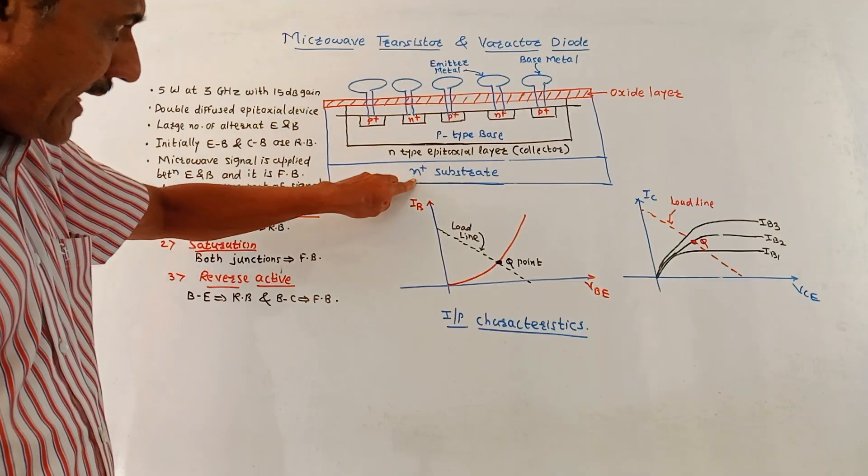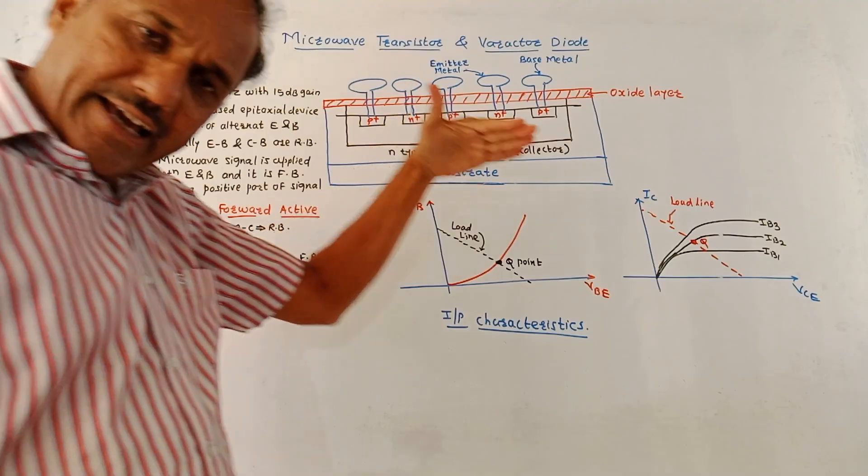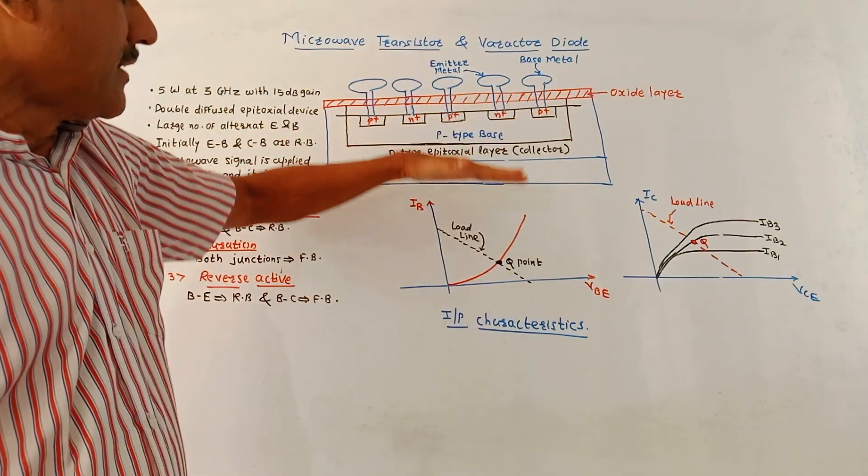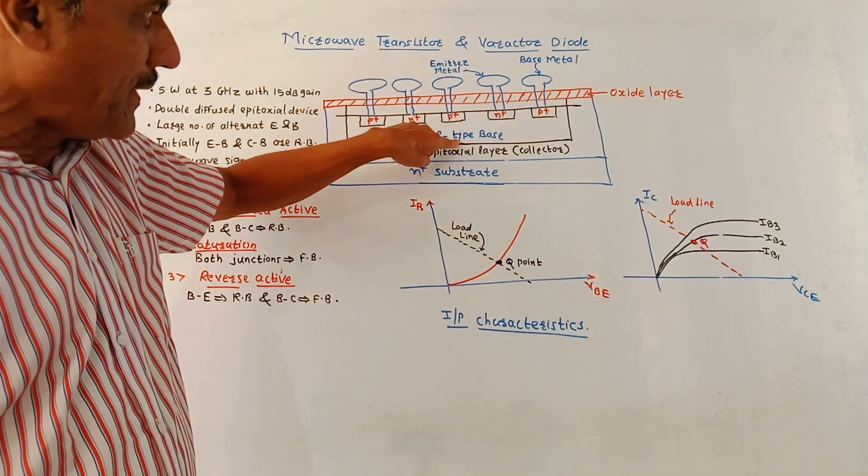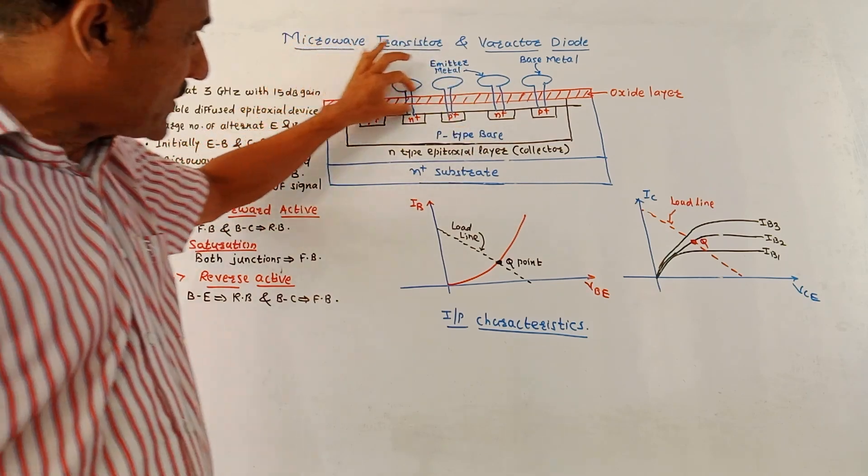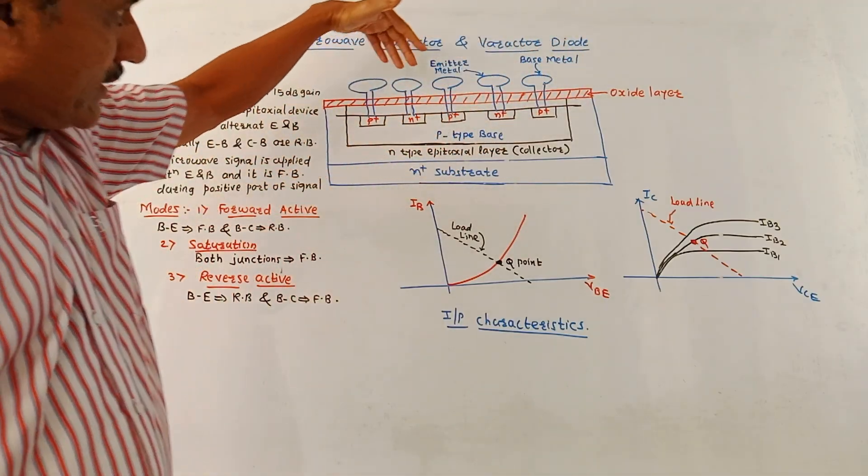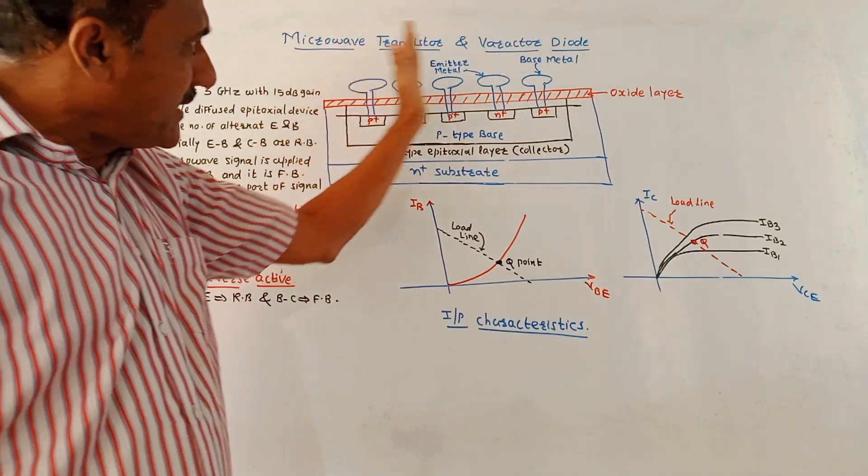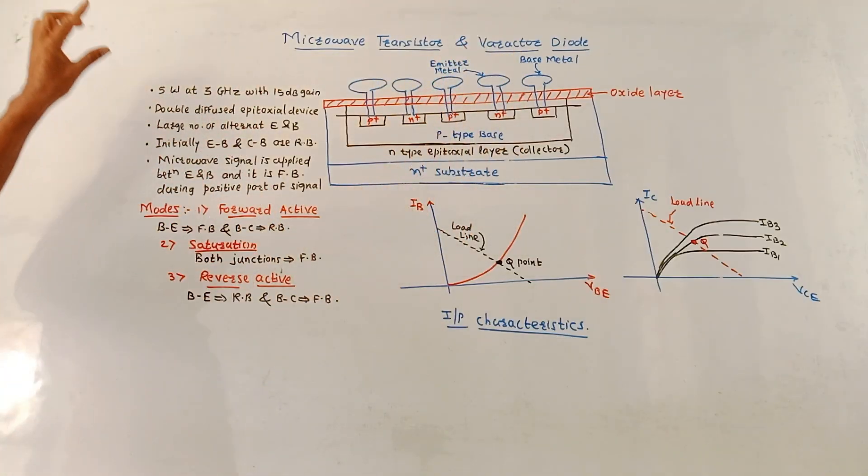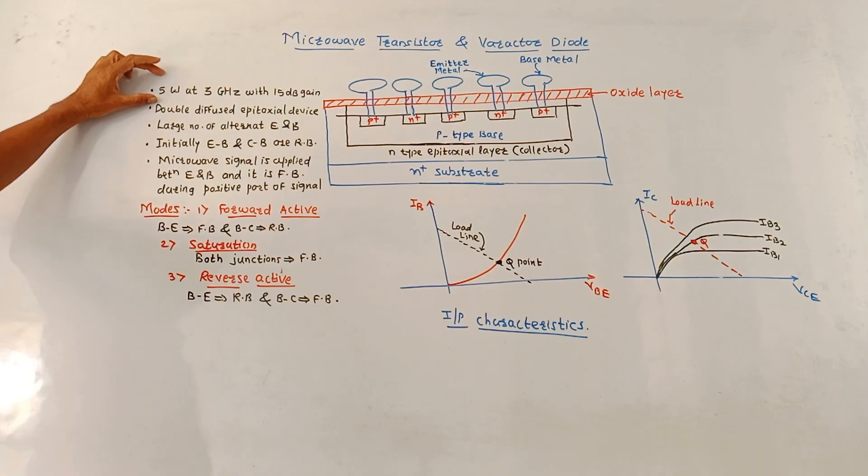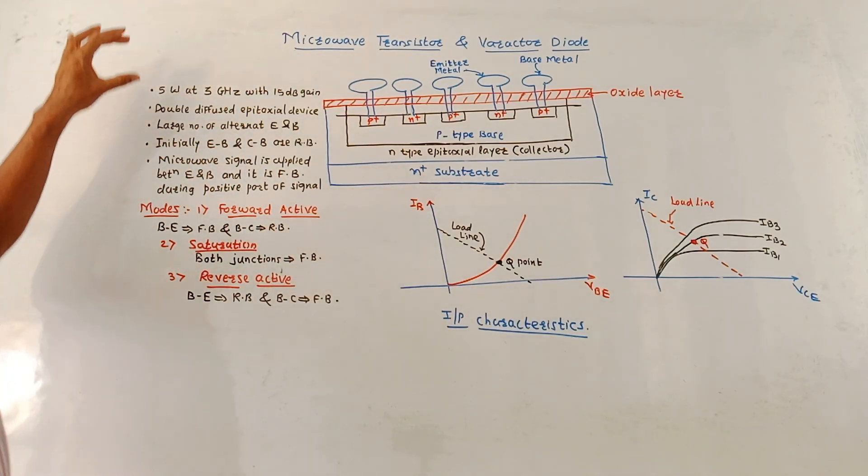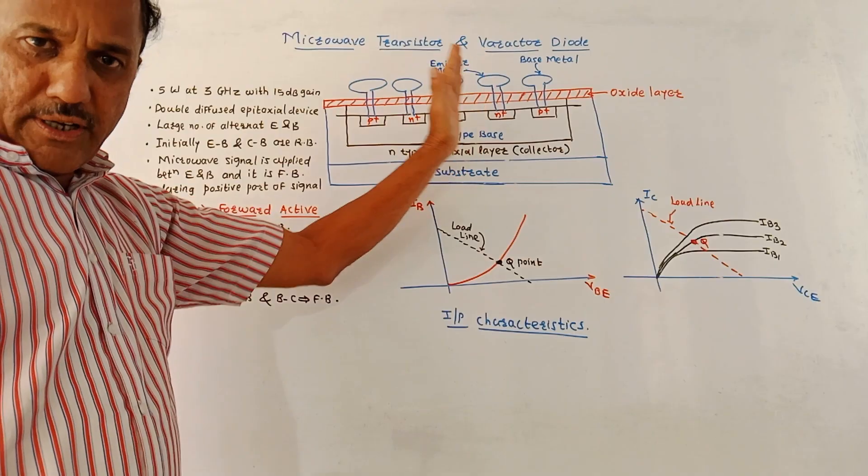As shown in this diagram, N plus substrate material is used above which one layer is epitaxially grown. This is N-type epitaxial layer which acts as a collector. Above this one more layer is there that is called P-type base layer. One oxide layer is used for isolation purpose and in this oxide layer the different base and emitter contacts are made. So there are alternate base and emitter strips. This Microwave Transistor typically provides 5 Watt at 3 GHz frequency and typical value of gain is 15 dB. This structure makes use of double diffused epitaxial layers.